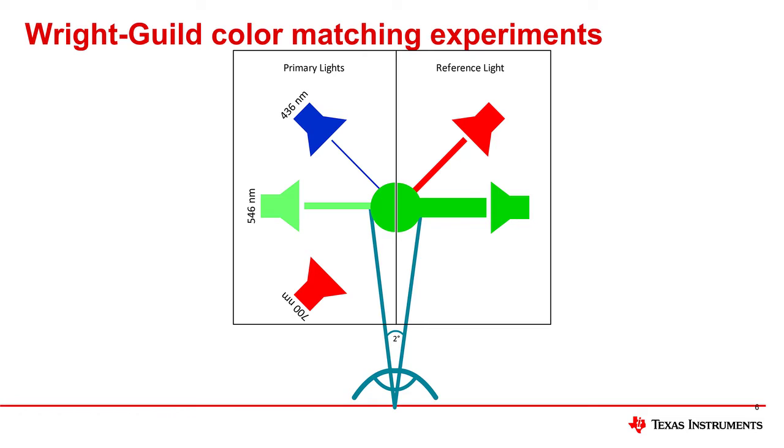For example, to create a bright green color, red light is needed on the opposite side of the partition to counteract the blue and green primaries. Since this experiment represents mixing together different ratios of primary colors, this opposite light source can be considered as a subtraction.